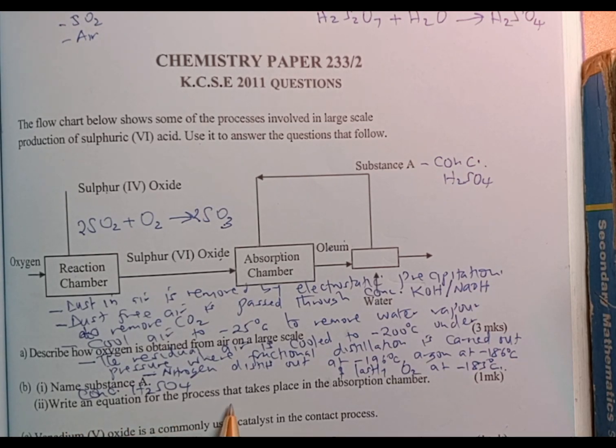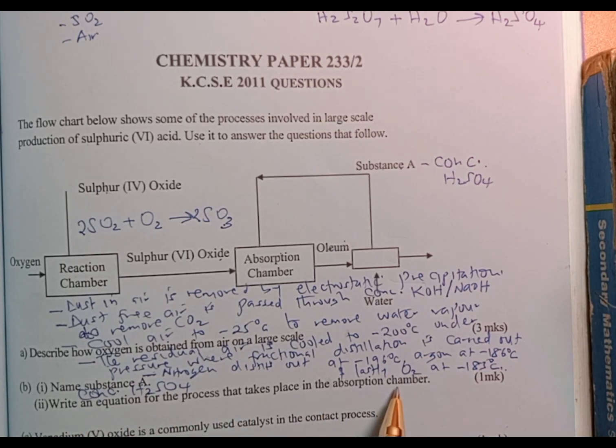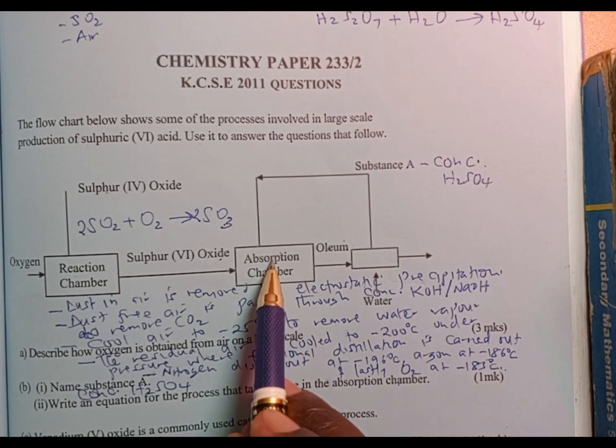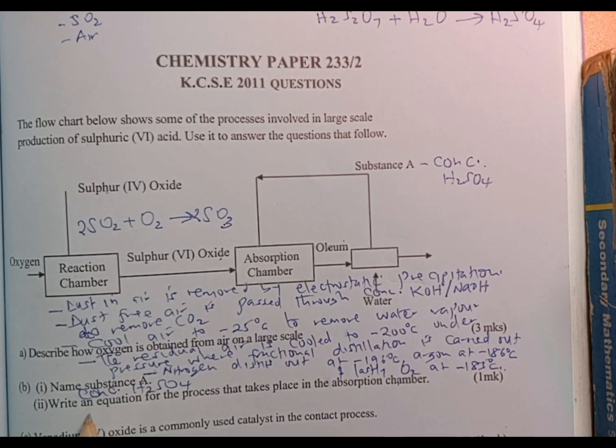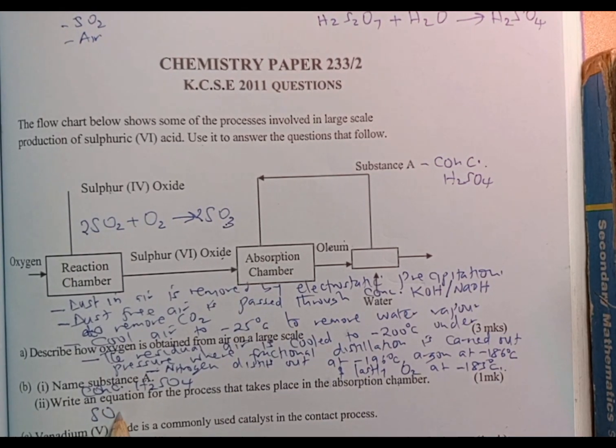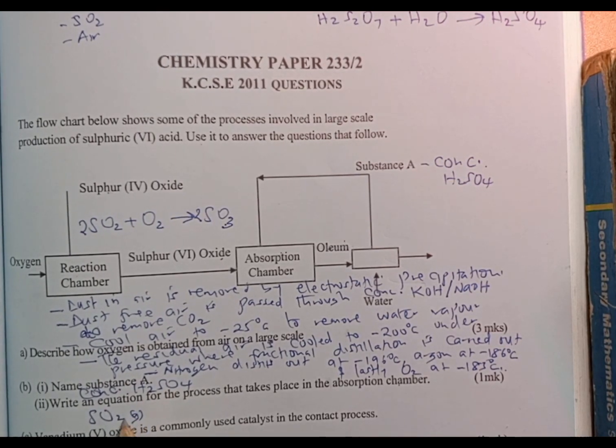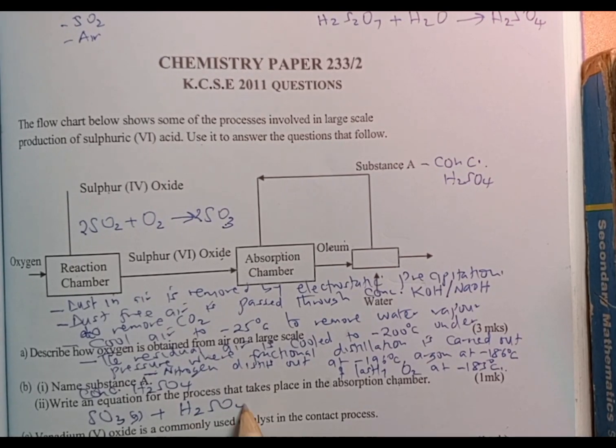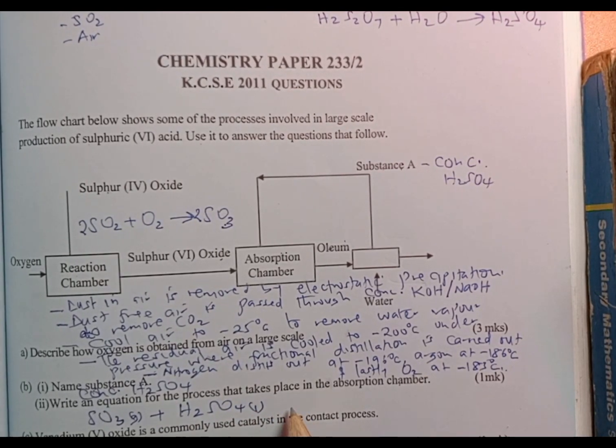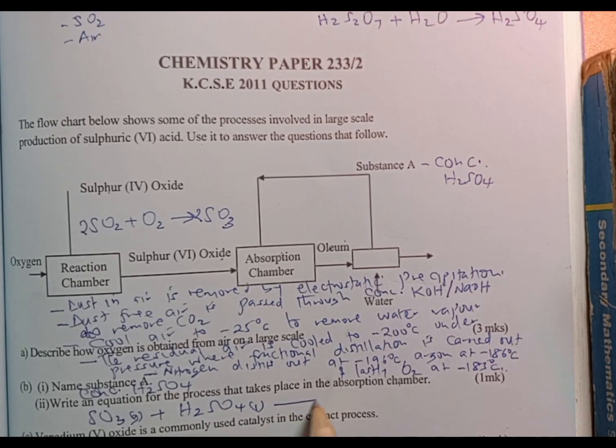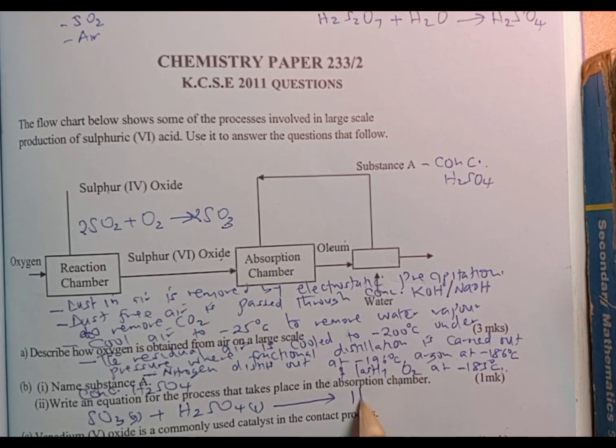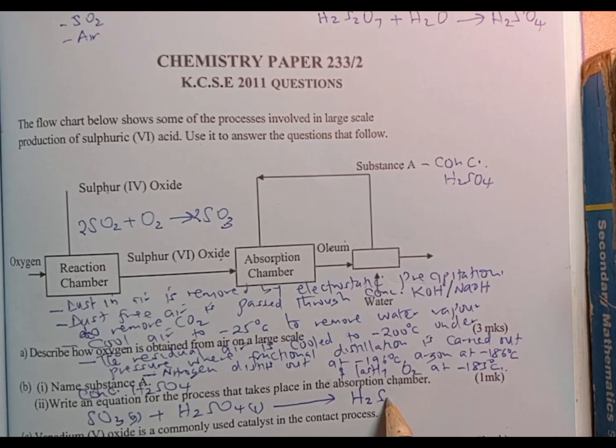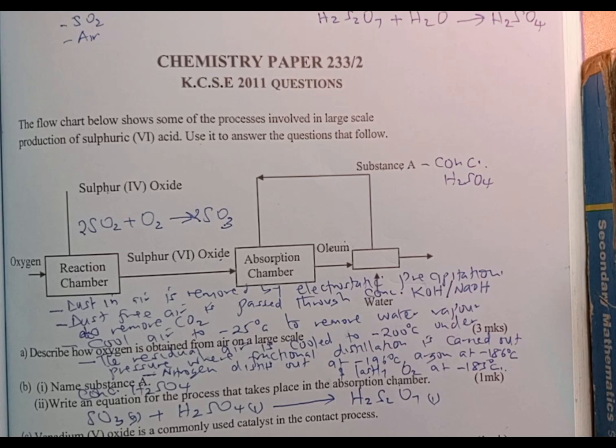Part 2: write an equation for the process that takes place in the absorption chamber. The absorption chamber is where we have sulfur trioxide gas reacting with concentrated sulfuric acid, which is a liquid, and this forms oleum, that is H2S2O7, which is a liquid.